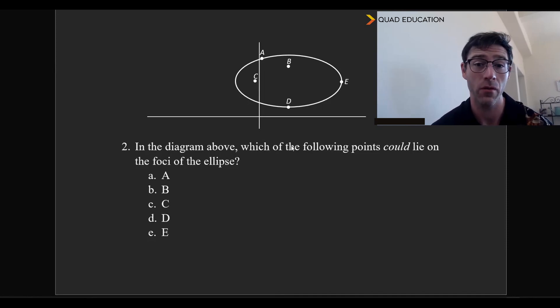All right, moving on to our next practice problem, see what you can do with this one. Let's take a look in the diagram above which the following points could lie on the foci of the ellipse.